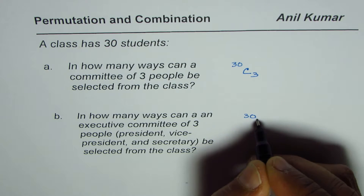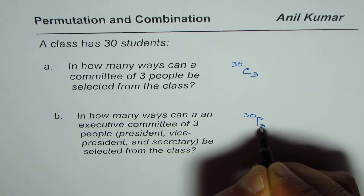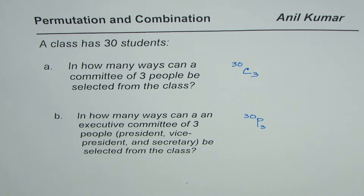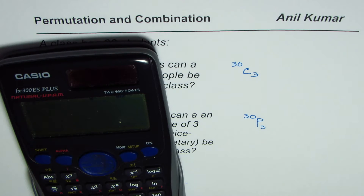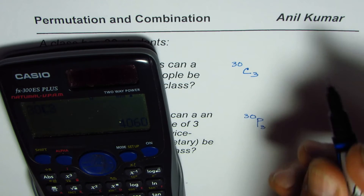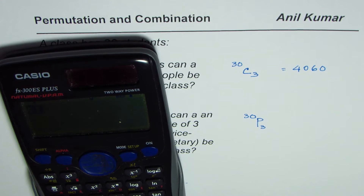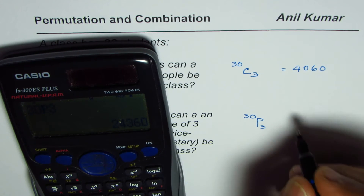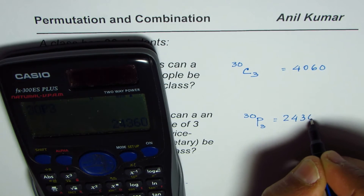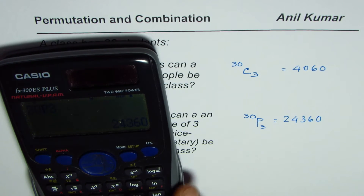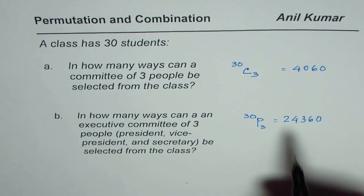That is 30P3. This example really explains when to use permutation and when to use combination. Let us calculate the answer. 30C3 equals 4060 — that is the answer for the first one. And 30P3 is equal to 24360 — that is the answer for the second part.